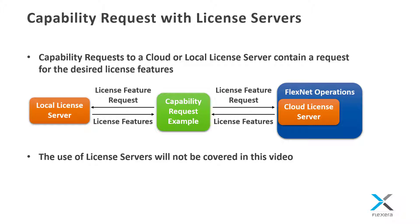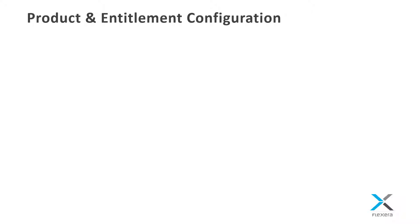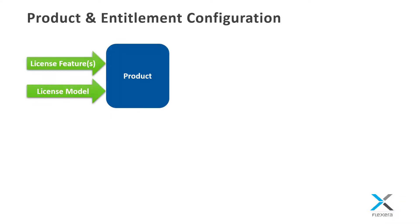The use of license servers will not be covered in this video. Let's now take a look at what needs to be configured in FlexNet Operations in order to run some of the examples in the FlexNet Embedded toolkits. First, we need to create a product. The primary attributes of a product are license features and a license model.